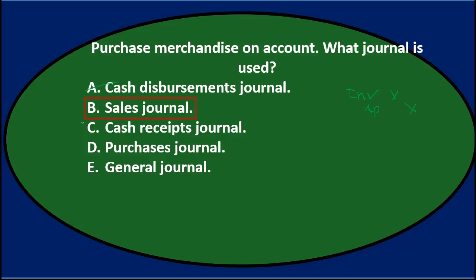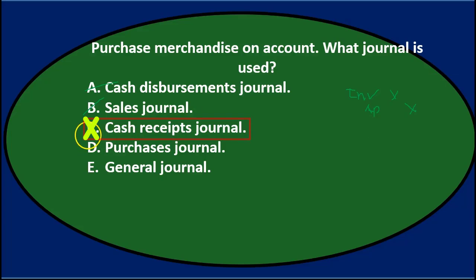B. Sales journal — a sales journal is typically used when we make a sale, and in this case we're purchasing something to sell later, so it's not the sales journal. C. Cash receipts journal — there's no cash involved here, we're purchasing stuff, so that's not it. D. Purchases journal — that's used when we purchase something, and we did purchase merchandise, so that looks like a strong candidate. E. General journal — that's the default journal if we can't find another special journal for the entry.